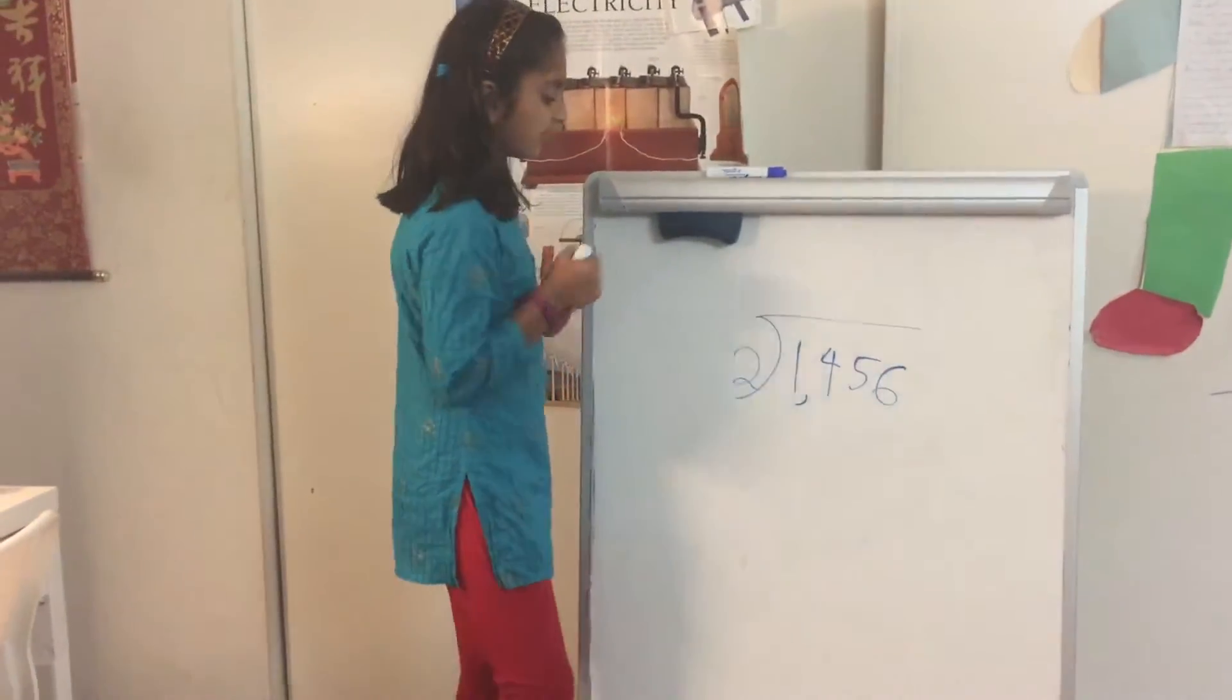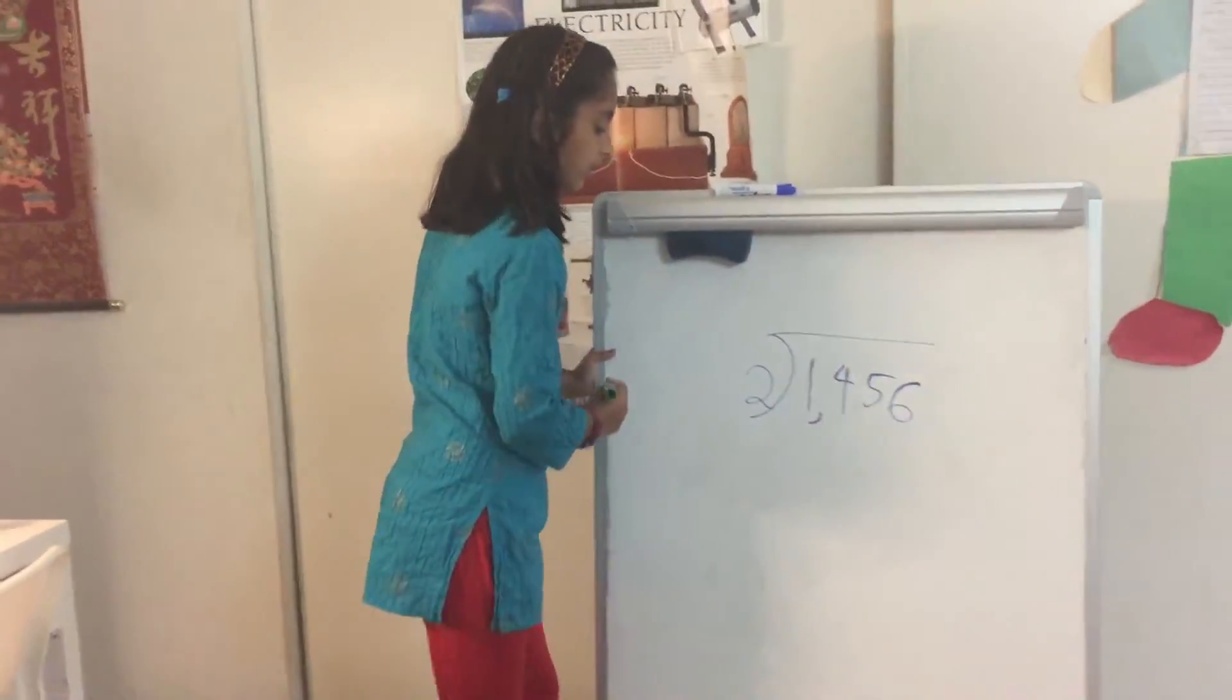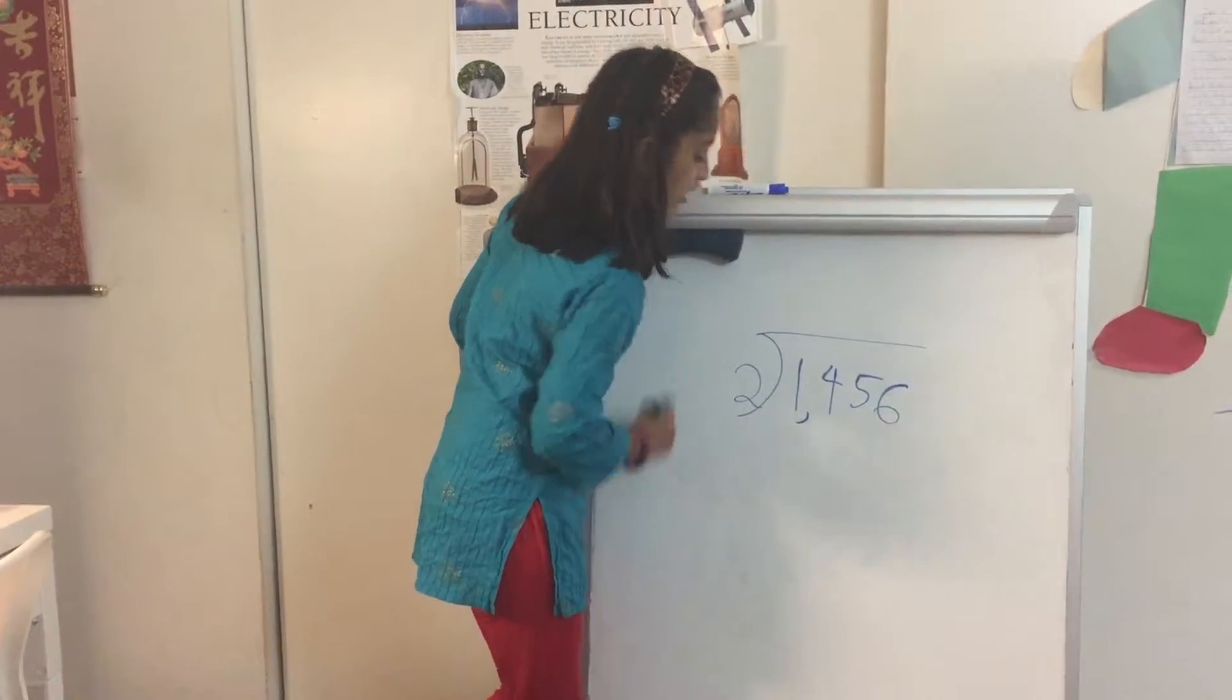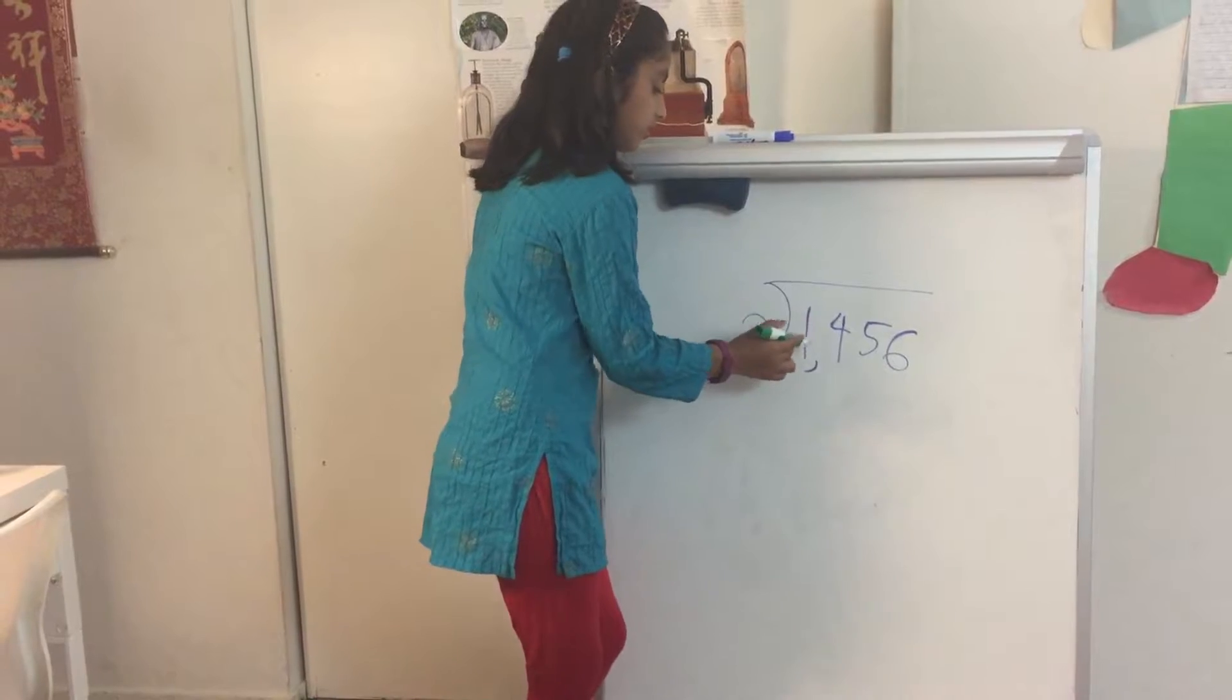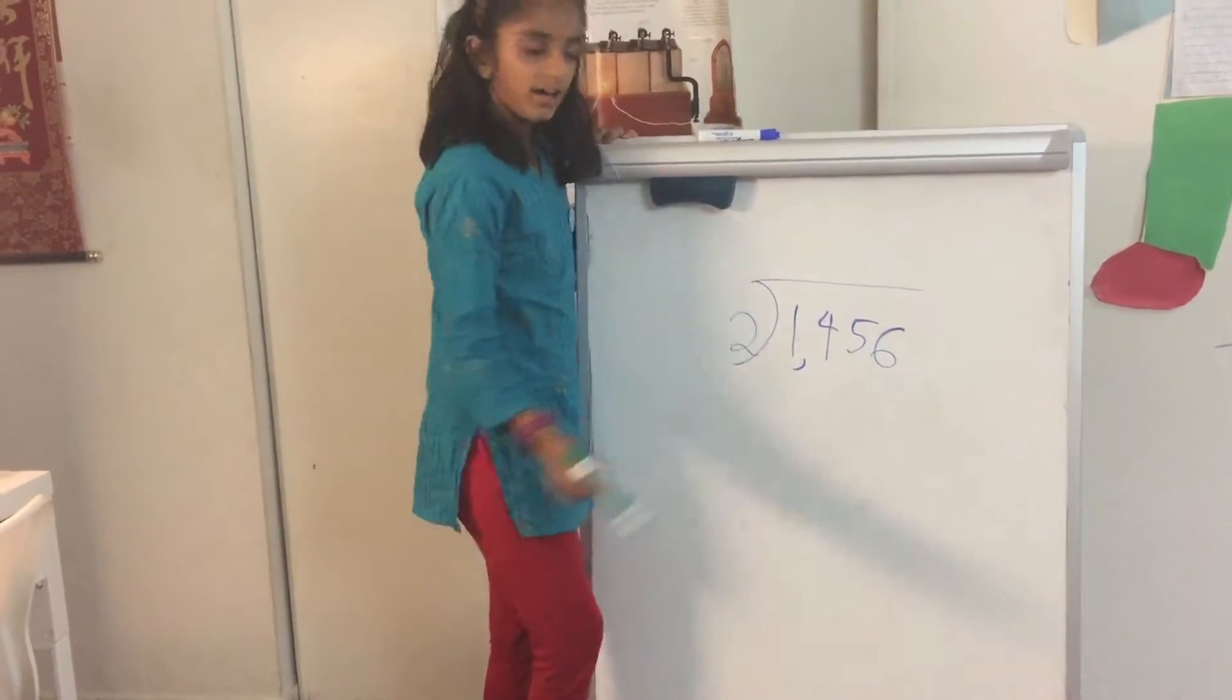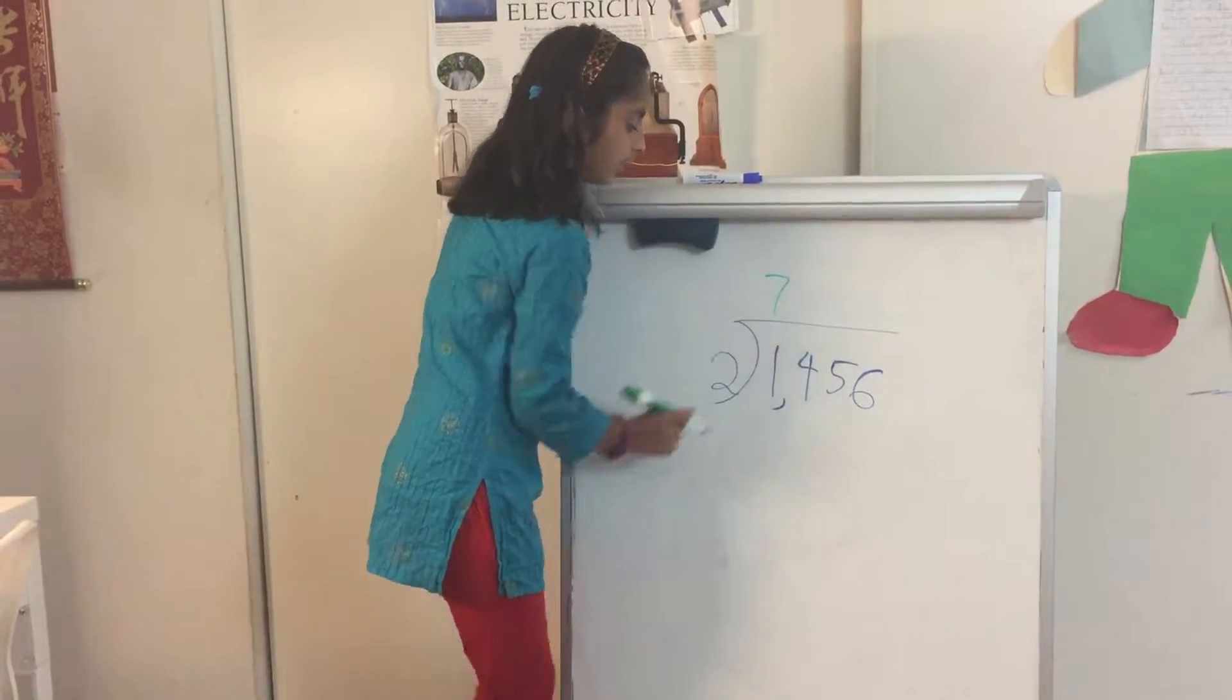Okay, so first we are going to start here. The first step we're going to do is, two times what is one? Nothing, right? So you have to go add this one to your neighbor, number four. So two times what is 14 now? Seven, right? So you write seven here.